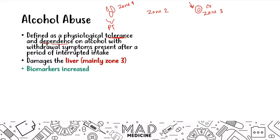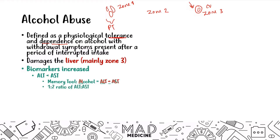When it comes to biomarkers, two main ones will be increased. AST is going to be greater than ALT in a 2:1 ratio — so AST is twice as much as ALT. For most cases of liver toxicity or hepatitis, AST is greater than ALT, and that holds true for alcohol as well. This usually returns back to normal in seven days.